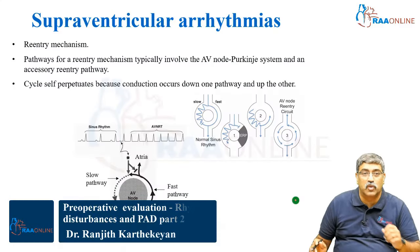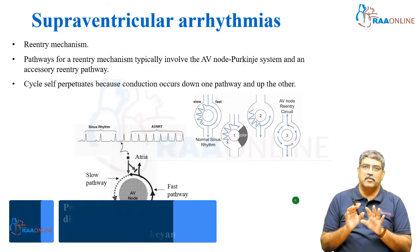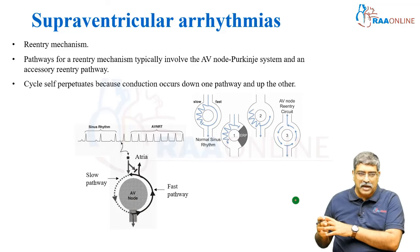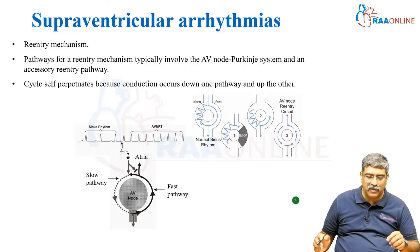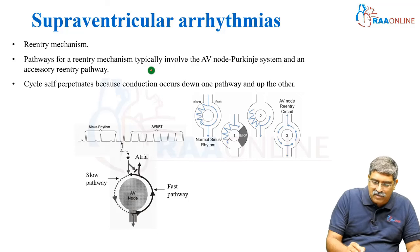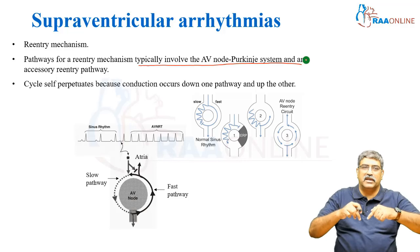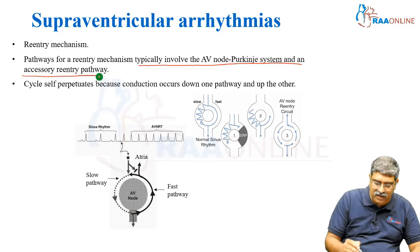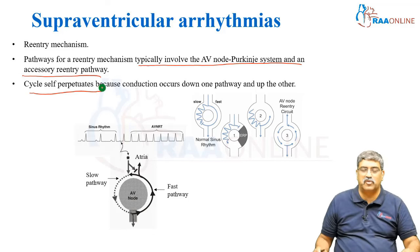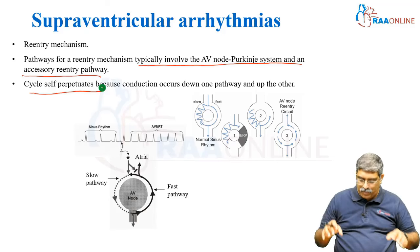Coming to supraventricular arrhythmias, here two mechanisms are there: one is reentry mechanism, another is ectopic foci mechanism. In case of reentry mechanism, the pathway typically involves the AV node, Purkinje, and an accessory reentry pathway. The cycle self-perpetuates because conduction occurs down one pathway and up the other.